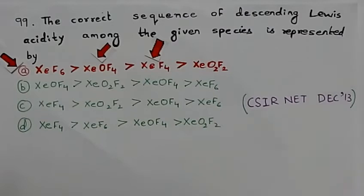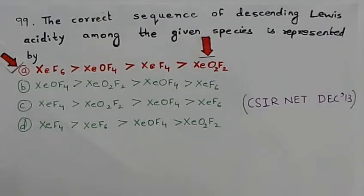The second and third species both contain four fluorine atoms, but the second species has one more electronegative atom — that is oxygen — and is hence more acidic. The last species has the least number of fluorine atoms and is therefore the least acidic.